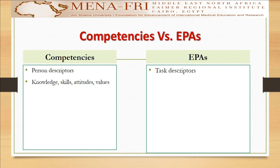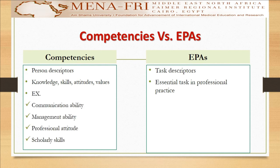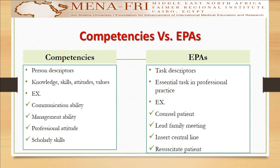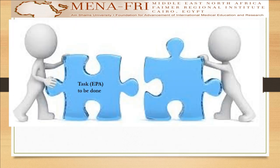It's a task that must be done. EPA examples include: management of care of a patient with acute complex disease across multiple care settings, demonstrating personal habits of lifelong learning, or providing care for the complicated newborn, infant, or child in invasive care settings. What's the difference between competency and EPA? Competency is a person descriptor, while EPA is a task descriptor. Competency includes knowledge, skills, attitudes, and values. EPA is an essential task in professional practice — like to counsel a patient, lead a family meeting, insert a central line, or resuscitate a patient. EPA is a task to be done, but you need a person with a competency to perform this task.